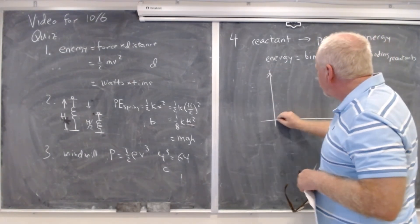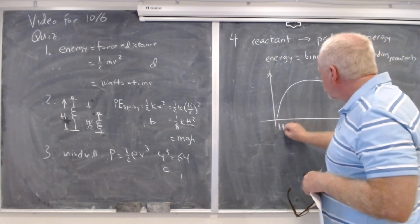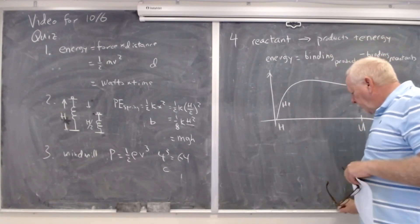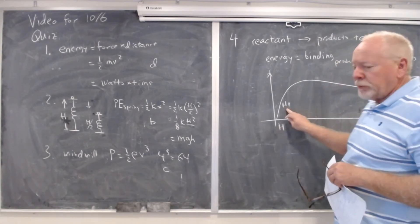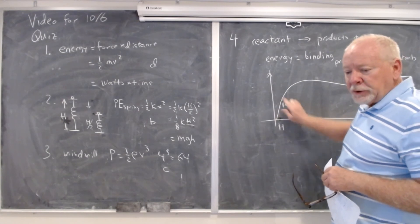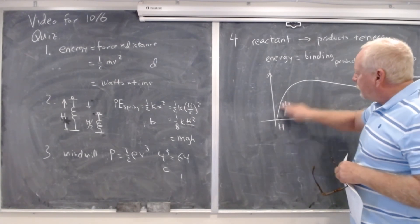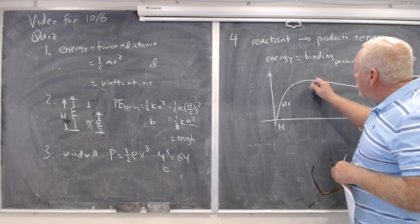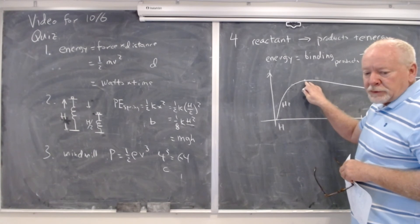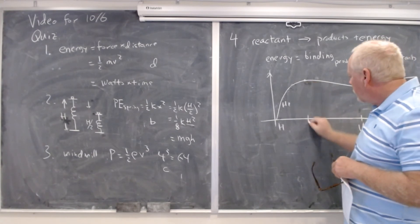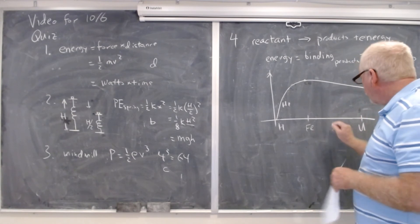The binding energy per nucleon curve peaks in the middle — out on one end you have uranium, over on the other you have hydrogen and helium. Inside a star, our own sun is currently fusing hydrogen into helium, releasing energy through that change in binding energy. As stars get older and run out of hydrogen, they fuse lighter elements together, continuing until they reach iron — the most tightly bound nucleus — which can't fuse to release more energy. So the answer was iron.